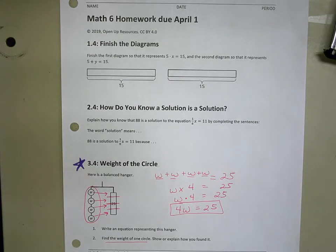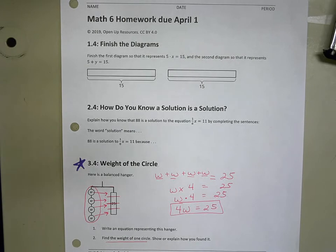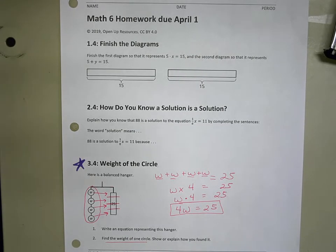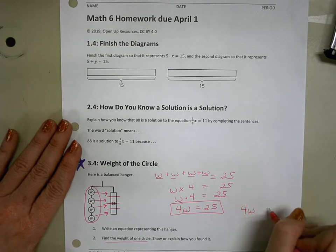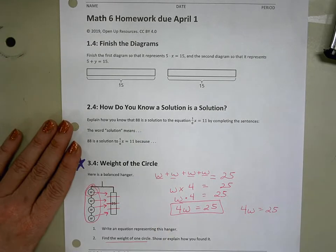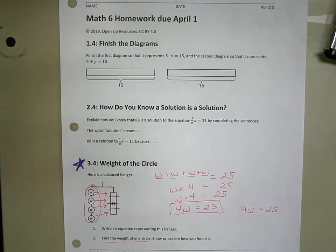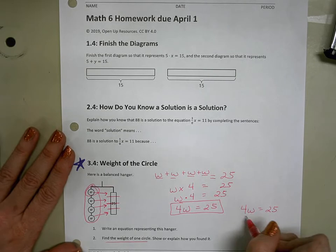I want to show you first using the equation because just because it's not a whole number answer does not mean that it's difficult. If four times W equals 25, and I just want one W, then we talked this week about doing the opposite operation. Instead of multiplying, I can divide by four.